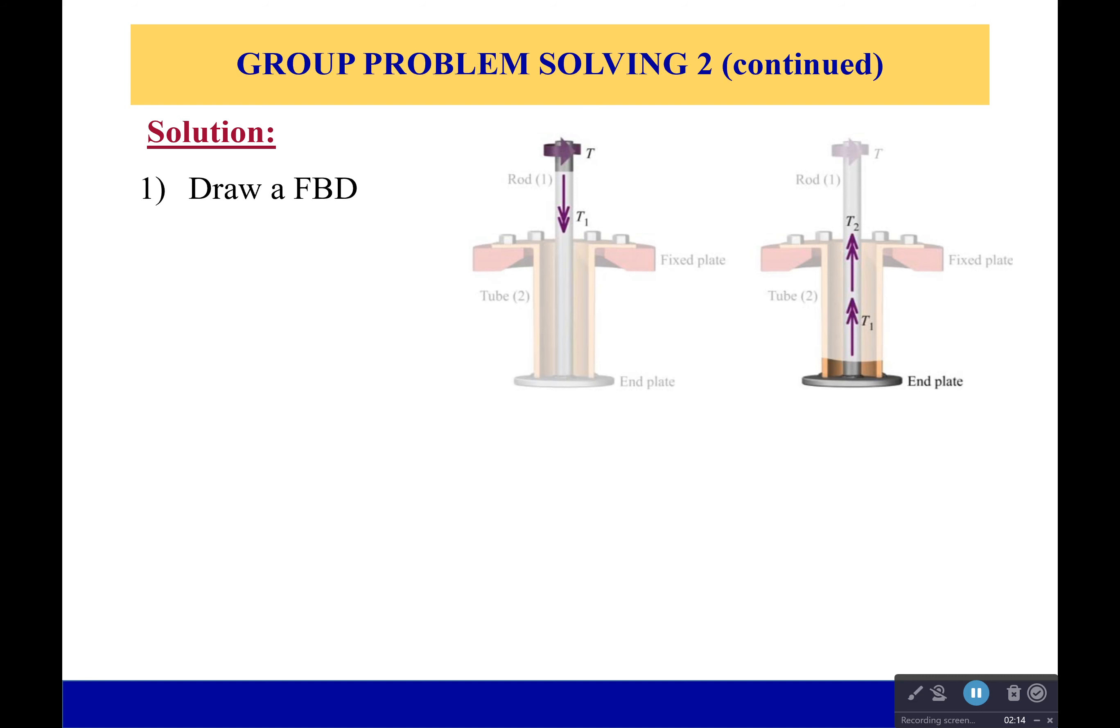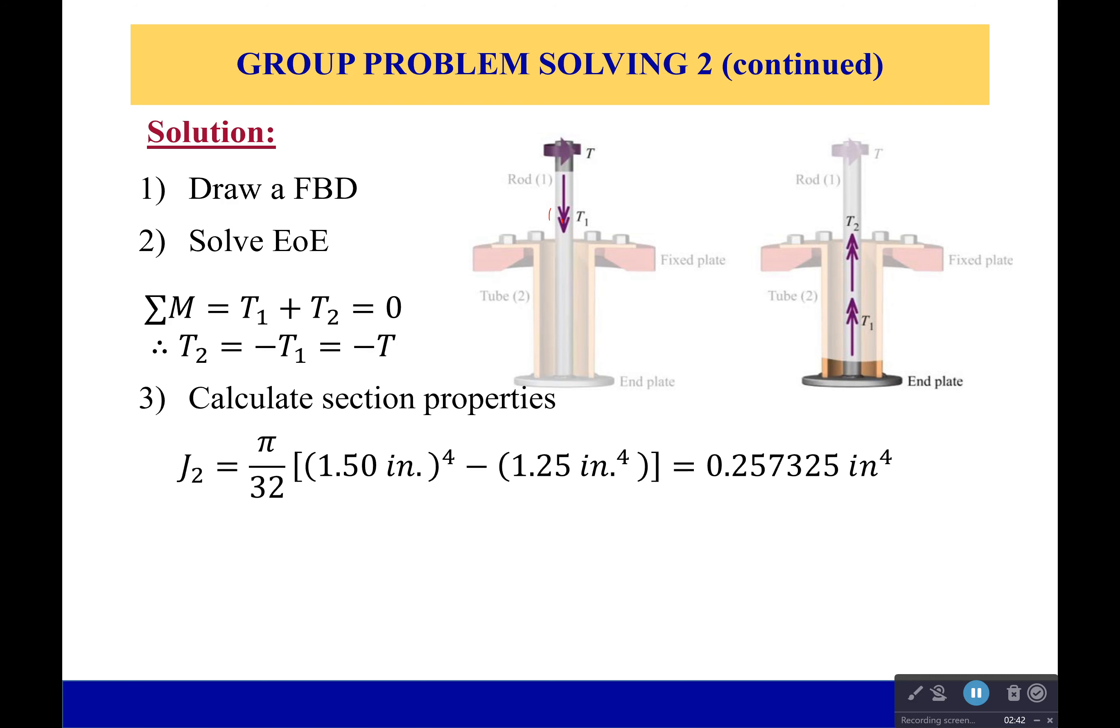Now we're going to have a torque in the steel rod, we're also going to have a torque in that end plate. And for that, we're going to need to start solving our equations of equilibrium. So what we can realize is that the torque in the steel rod is going to be the same as the torque in that end plate, it's going to be in opposite directions.